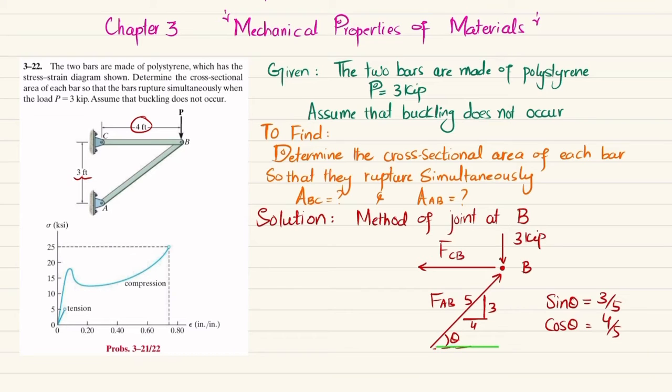And this force will have two components: one along x-axis in this direction, another one in y direction. So this component will be FAB sine theta and this component will be FAB cos theta. Now we will apply equation of equilibrium that sum of all forces along y direction must be equal to 0 and upward force is positive. So minus 3 plus FAB sine theta is equal to 0.